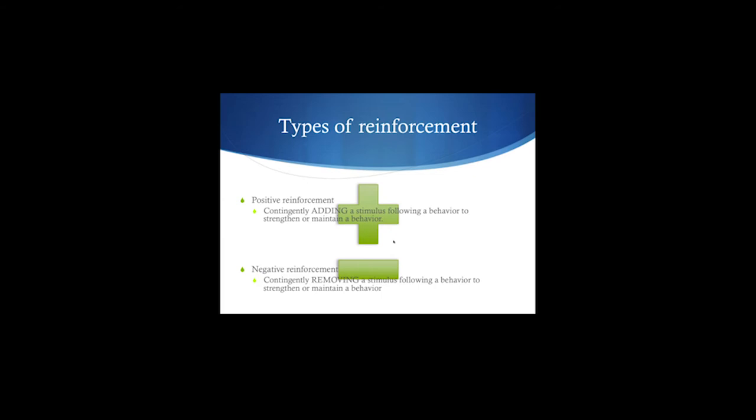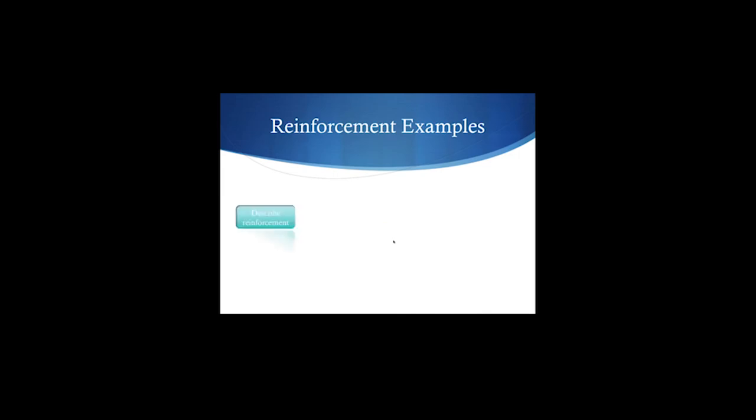A good example of negative reinforcement is a headache — if you've got a headache and you do something and the headache goes away, whatever you did was reinforced by the loss of the headache. We'll talk more in depth about escape and avoidance later, which is what negative reinforcement really is. If you're escaping a stimulus — experiencing something aversive and doing something to get away from it successfully — that's a negative reinforcement situation. If you're doing something to avoid something aversive happening, that is also a negative reinforcing situation.